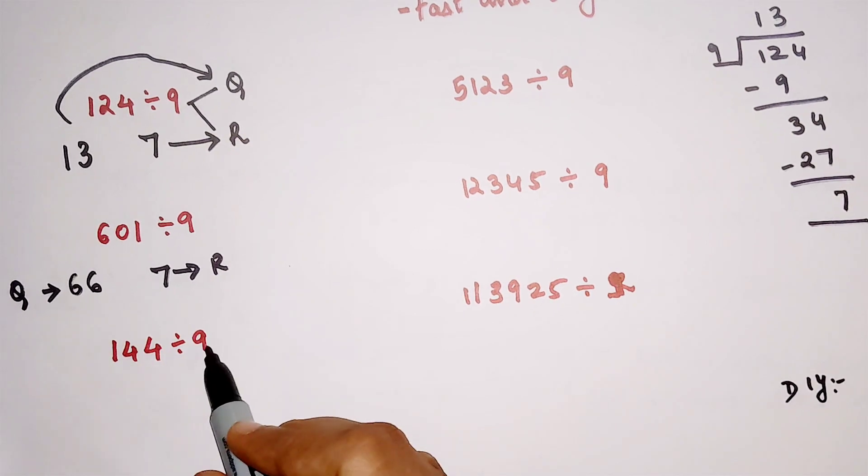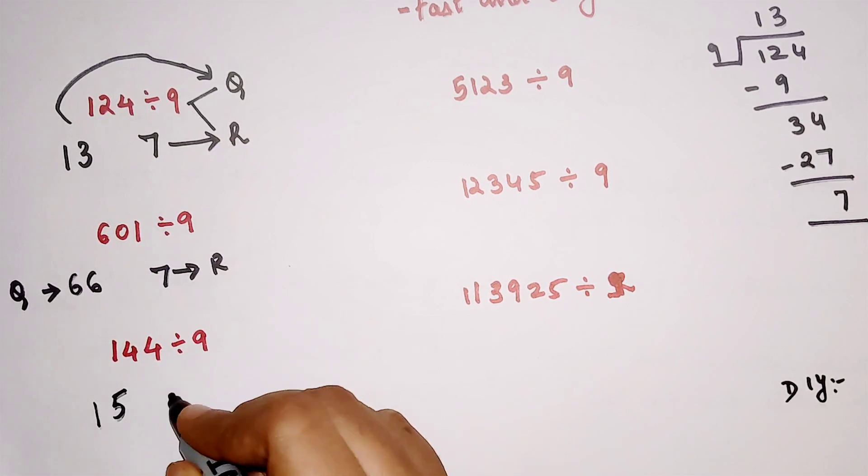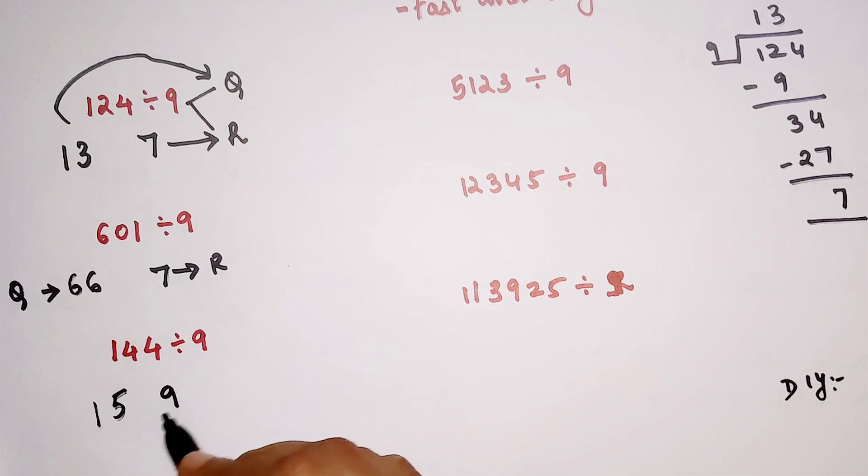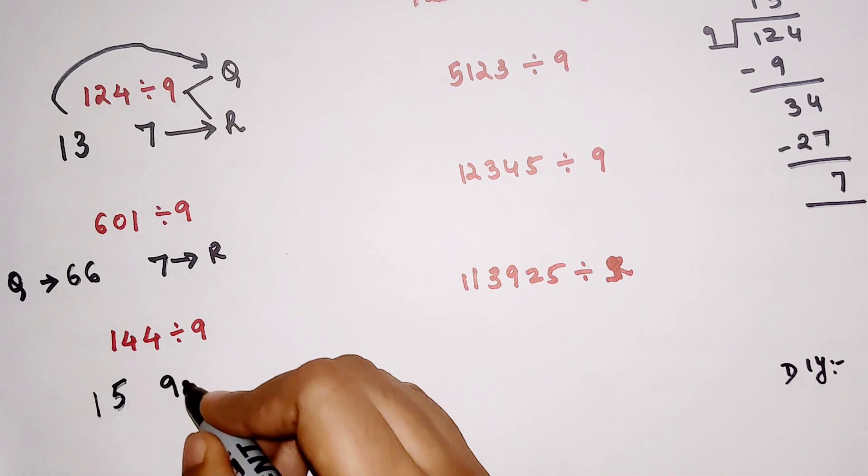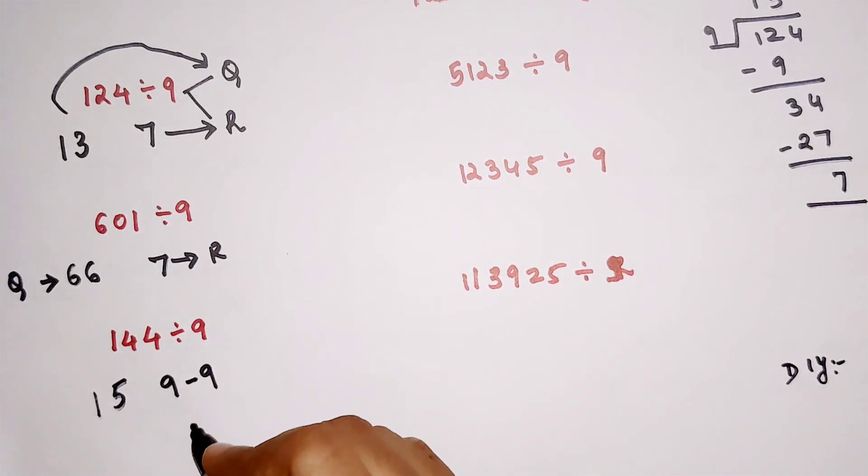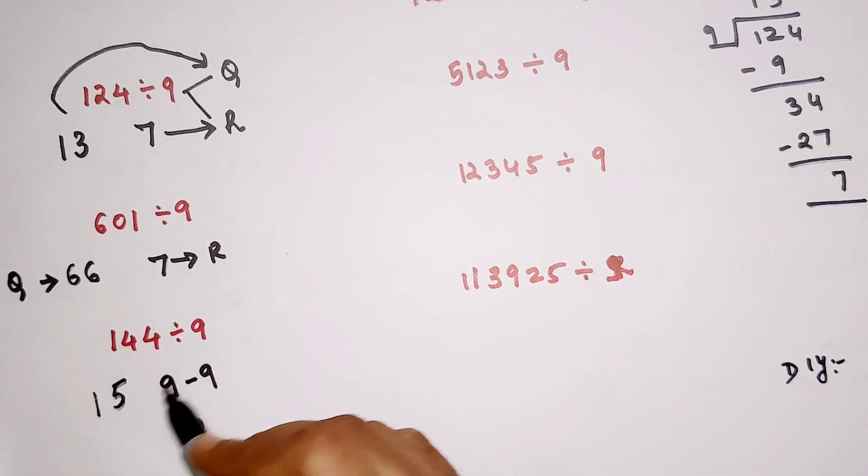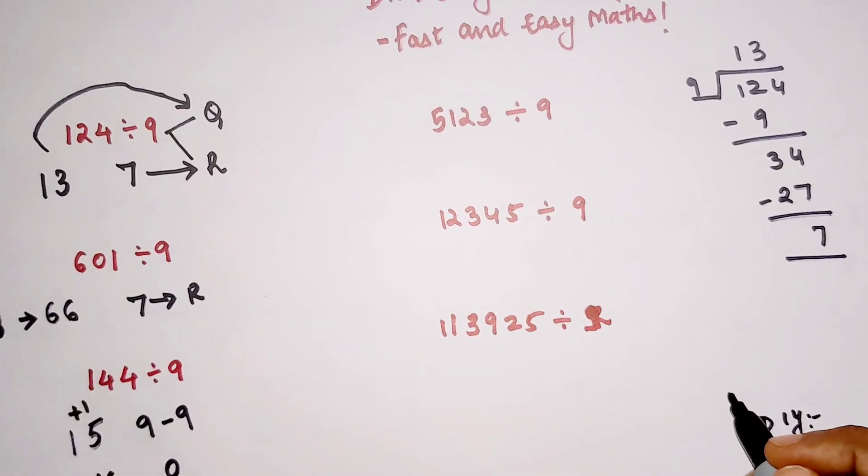So what happens in that case is: we have 1, we will write as it is, 1 plus 4 we will write 5, and 5 plus 4 is 9. Now please understand, when you have a remainder which is 9 or greater than 9, then what you have to do is subtract this 9 by 9. So here your remainder comes out to be 0, and since you subtracted 9, you will add 1 here. So your final answer will be just a quotient of 16 for this particular division.